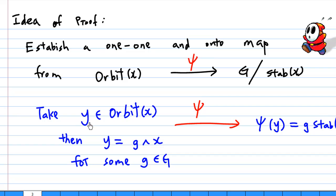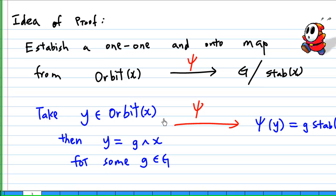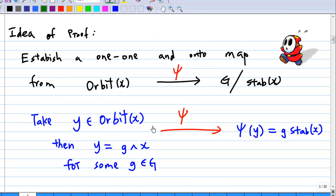Take y from the orbit of x. That means y must equal g·x for some element g of the group G. The image of y under psi, that is psi(y), is equal to the coset g·Stab(x).